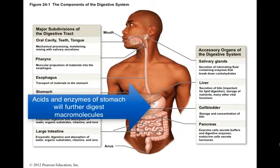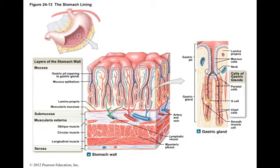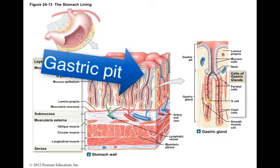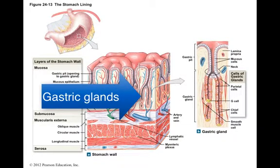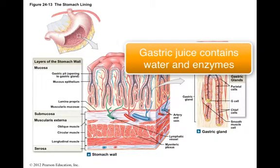Once the bolus hits the stomach, it is greeted by acids and enzymes that will chemically digest it further. Within the stomach are microscopic gastric pits that contain mucus cells lining the sides. These mucus cells secrete mucus to coat the stomach lining, making it impermeable to water. Below the gastric pits are the gastric glands, dominated by two cell types: parietal cells and chief cells. Together they secrete about 1.6 quarts or 1500 milliliters of gastric juice each day, which contains mostly water and some enzymes.